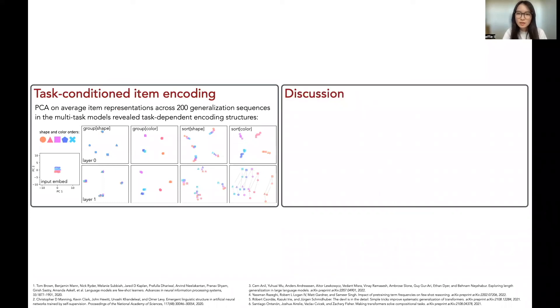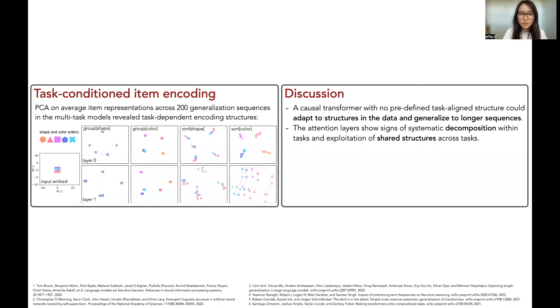So, taken together, here we show that a causal transformer with no predefined task-aligned structure could adapt to structures in the data and generalize to longer sequences. The attention layers show signs of systematic decomposition within tasks and with exploitation of shared structures across tasks. The out-of-distribution problem of position-based encoding methods can be addressed by the label-based order encoding, which improves length generalization in transformers.